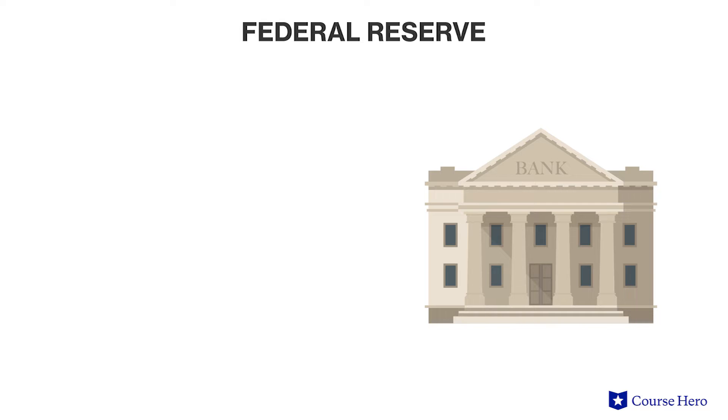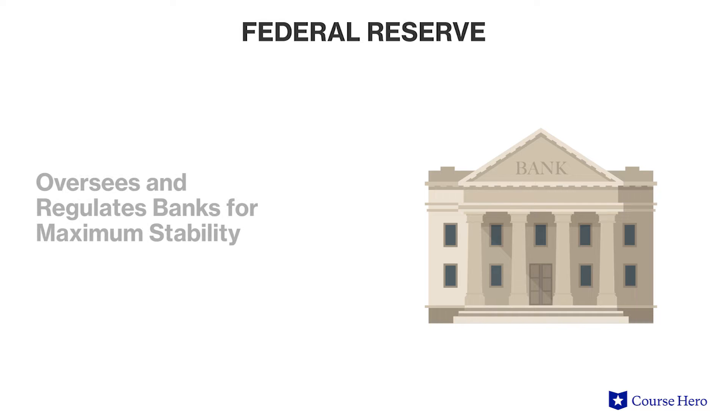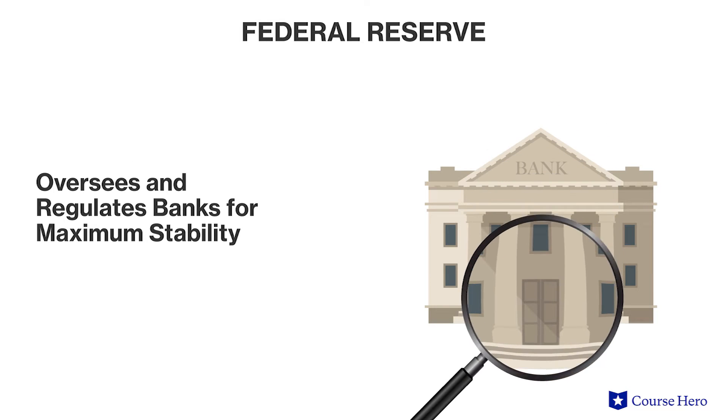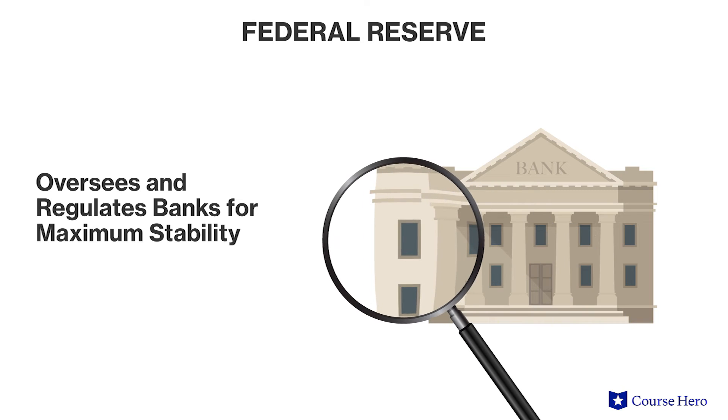It does this by influencing the interest rate, which in turn affects households' purchasing habits, which affects the production of goods and services. The Federal Reserve is also in charge of overseeing and regulating banks to achieve maximum stability and encouraging consumer confidence in commercial banking. These were important needs during the early 1900s, a financially volatile time, and are still important today.